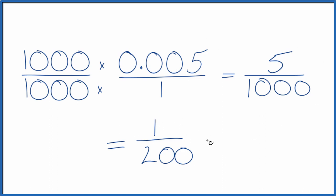And all of these are equal. If you divide 1 by 200 or 5 by 1,000, you'll end up with the decimal 0.005.